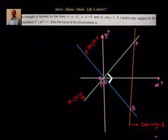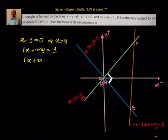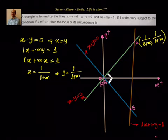First, let us find out the coordinates of A. For coordinates of A we solve x minus y equal to 0 and lx plus my equal to 1. Since x minus y equal to 0 tells us x equal to y, we substitute: lx plus mx equal to 1, giving x equal to 1 by l plus m. This also tells us y equal to 1 by l plus m. So the coordinates of A are 1 by l plus m comma 1 by l plus m.